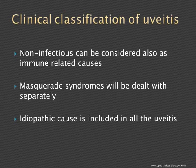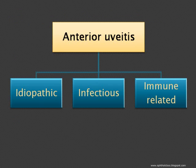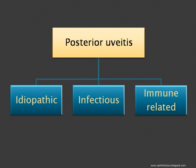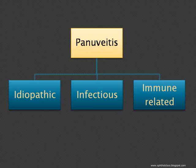Clinically, we will find that ultimately we will have to put uveitis into the idiopathic group more often than not. Thus, anterior uveitis can be considered under the following headings: idiopathic causes, infectious causes, and immune-related causes. Similarly for intermediate uveitis, posterior uveitis, and pan uveitis — all of these can have causes under the idiopathic variety, the infectious variety, or the immune-related causes.